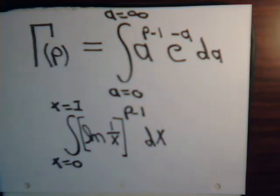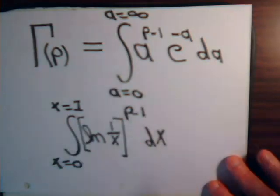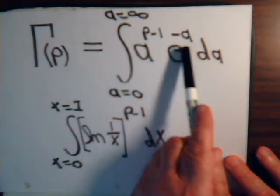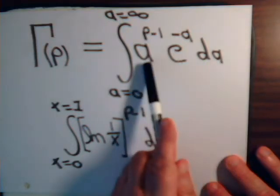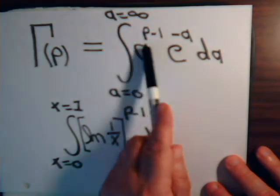In this video, we want to show a basic identity for the gamma function. Here is our gamma integral, the gamma function of p, e to the minus a dA, then a is raised to not the power p, but p minus 1.